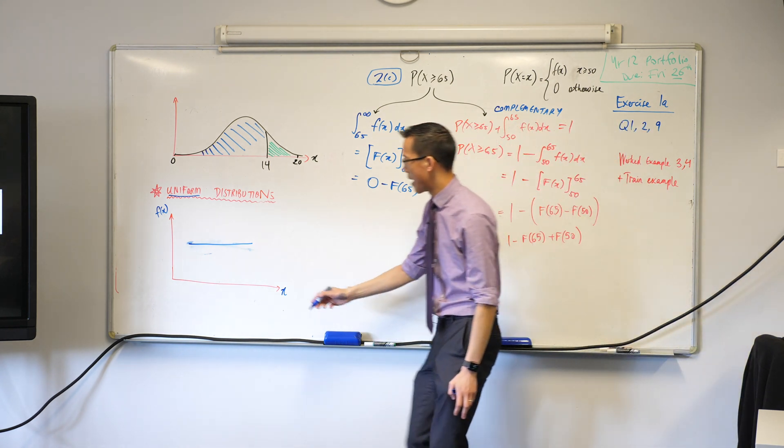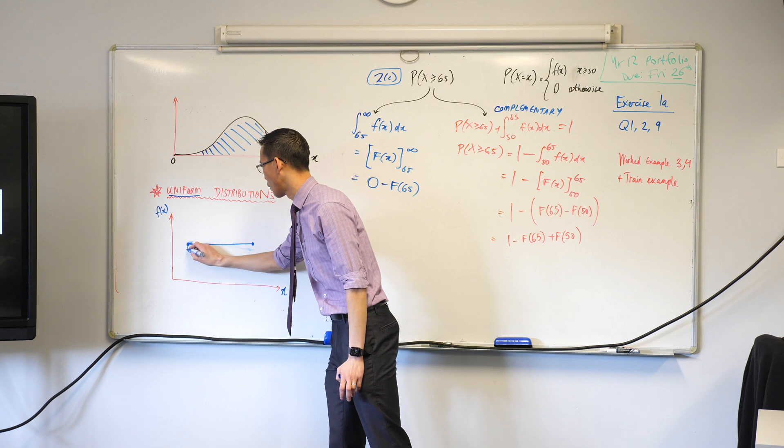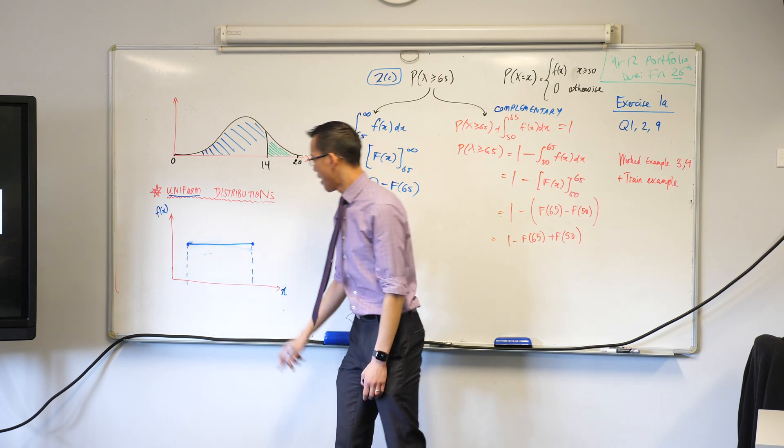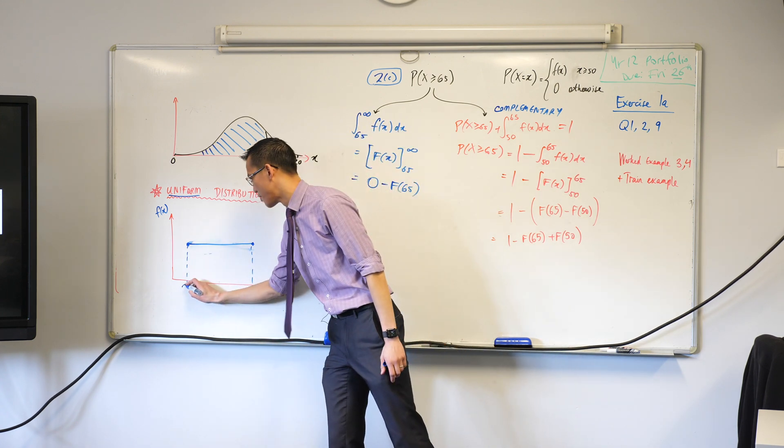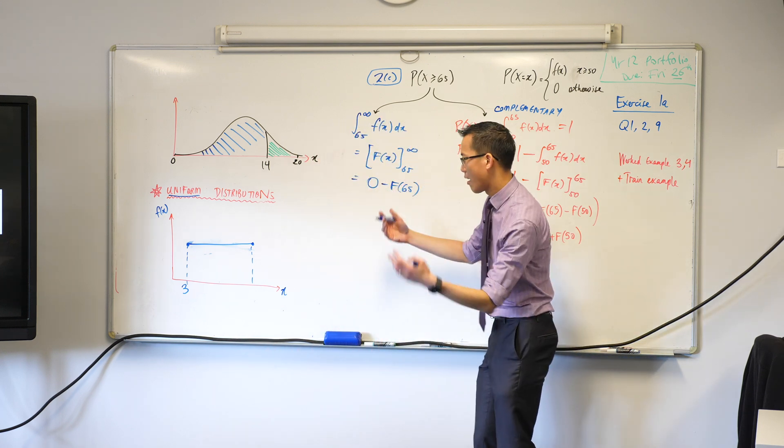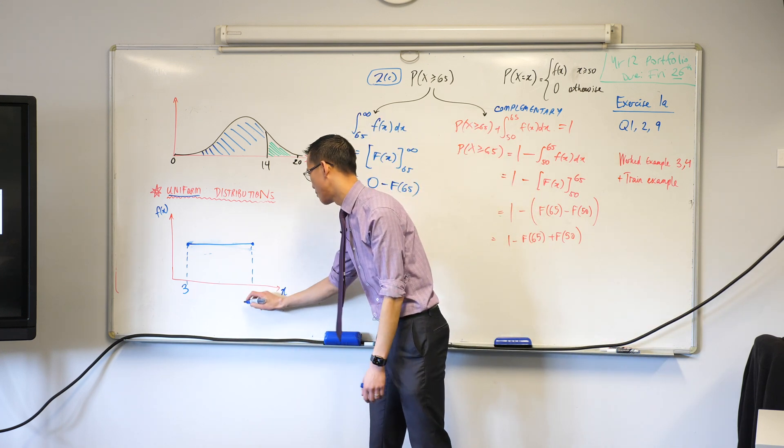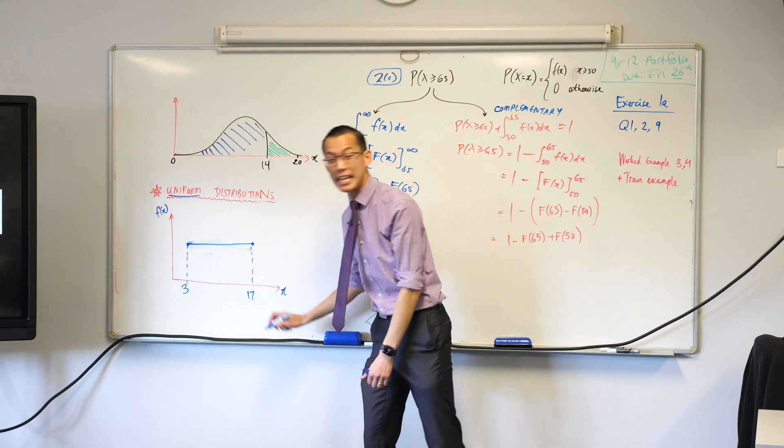If we were to put some boundaries on this, let's say, for example, we had some event, and the lowest possible value happens to be 3, the highest possible value is something like 17.